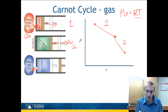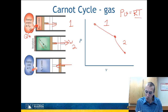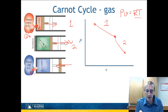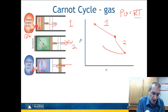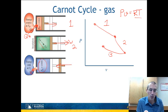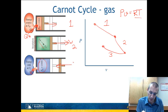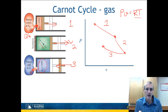Now we start to reverse the system. In step three, the system is compressed and heat is rejected while keeping the temperature constant. We are now at the lower temperature TL. As volume decreases, pressure goes up somewhat, following that isotherm. That is step three of the Carnot cycle.